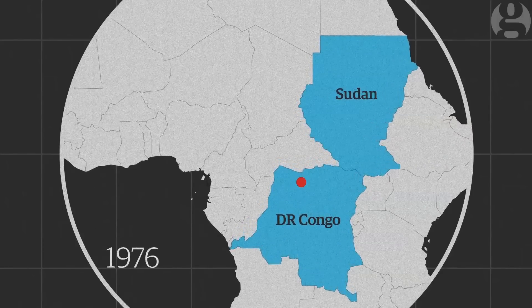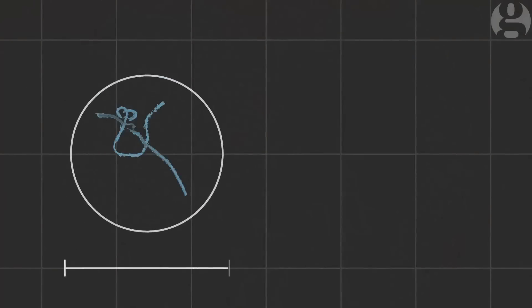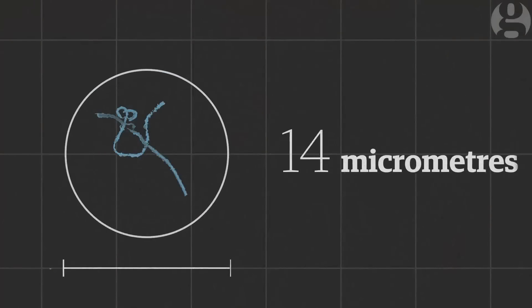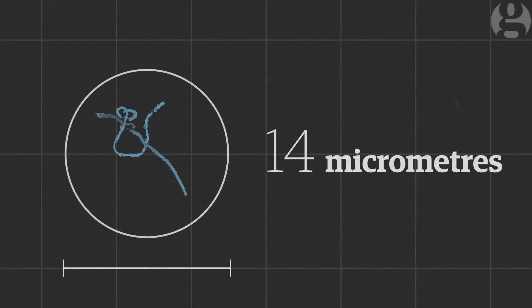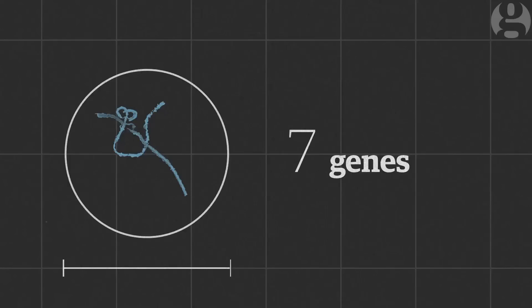The virus has an unusual shape — it's very long and thin compared to others. But despite the devastating impact of the virus, it's genetically very simple. Its single strand of RNA contains only seven genes.